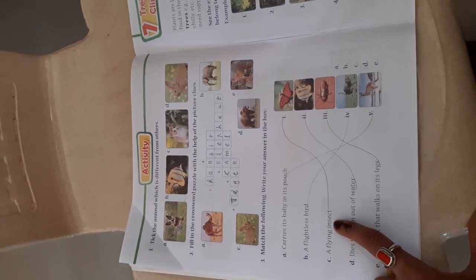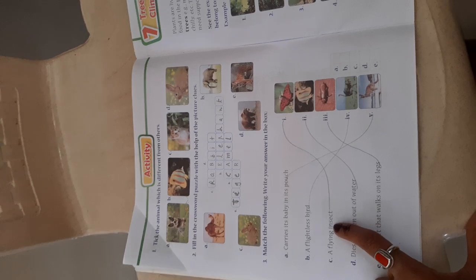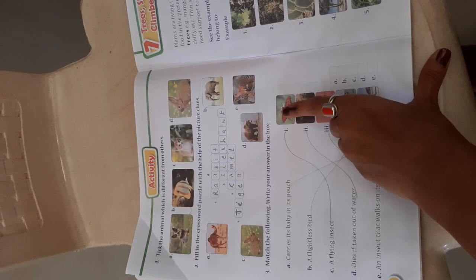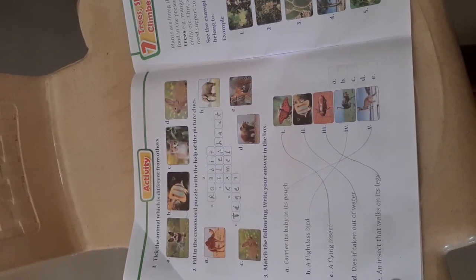A flying insect - it is a butterfly. Butterfly is an insect and it can fly. So you have to tick mark at number 1 and write C in the box.